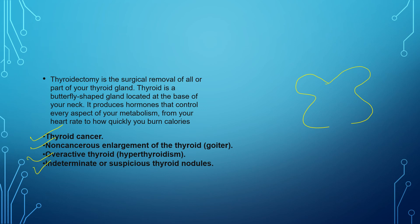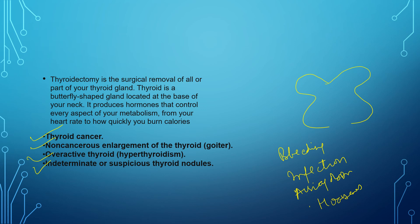Thyroidectomy is a safe procedure, but there can be potential complications including post-surgical or intraoperative bleeding, post-operative infection, low parathyroid hormone levels caused by surgical damage to the parathyroid glands, airway obstruction, and permanent hoarseness or weak voice due to nerve damage.